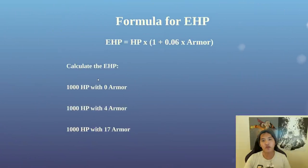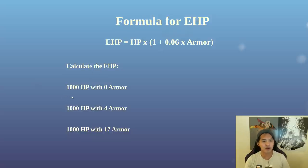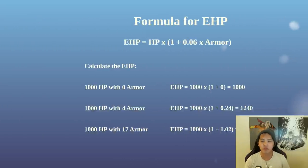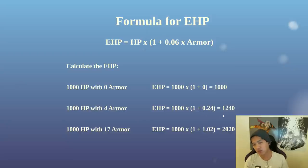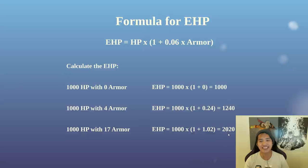Now with that formula for EHP, we're going to calculate EHP with some basic values: 1000 HP with zero armor, then four armor, and then 17 armor. Using the formula with zero armor, you have 1000 EHP. With four armor, it becomes 0.06 times four, which is 0.24 — add one, multiplied by 1000: 1240 EHP. And with 17 armor, this term becomes 1.02, for 2020 EHP.